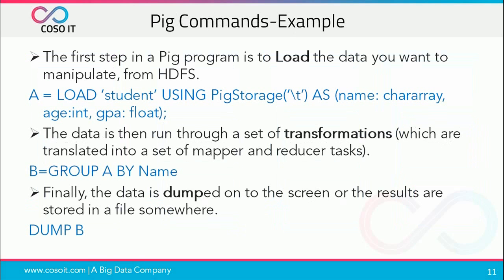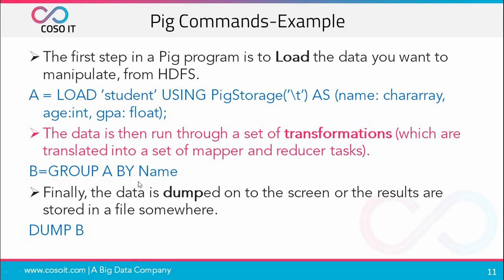The first step in a Pig program is to load the data from a file. Here we take a variable A and load the data from a student file using PigStorage with tab delimiter — the fields are separated by tab, and we provide the field names and data types. This data is then run through a set of transformations, ultimately translated into a MapReduce job. We can apply any transformation and put it in variable B — for example, group A by name, or sort it. Finally, the data is dumped to the screen using the dump B command, or results can be stored in a file using the store command.